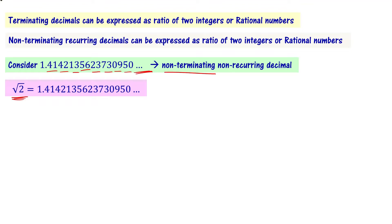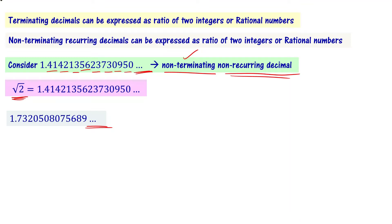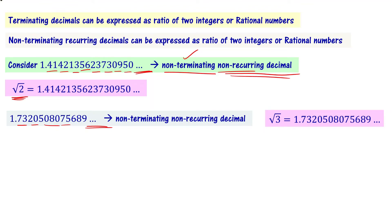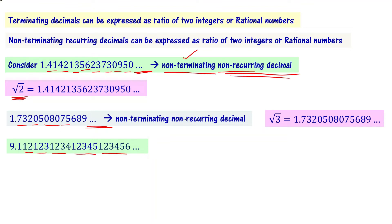That is a non-terminating non-recurring decimal. Now look at 1.7320508075689... and so on. You can see that it is non-terminating and the digits are non-recurring. Its value is equal to root 3. Also consider 9.11212312341234512345612345671... and so on — this is also a non-terminating non-recurring decimal.